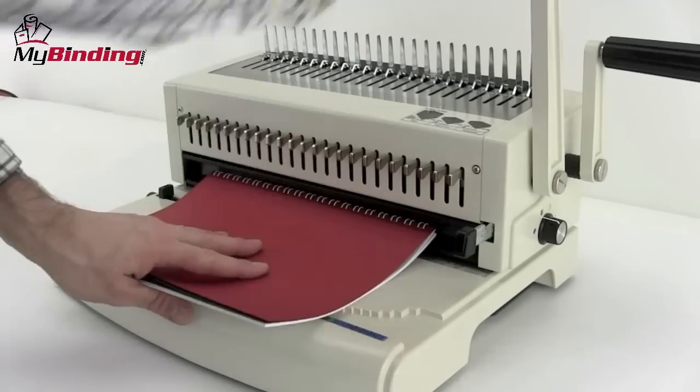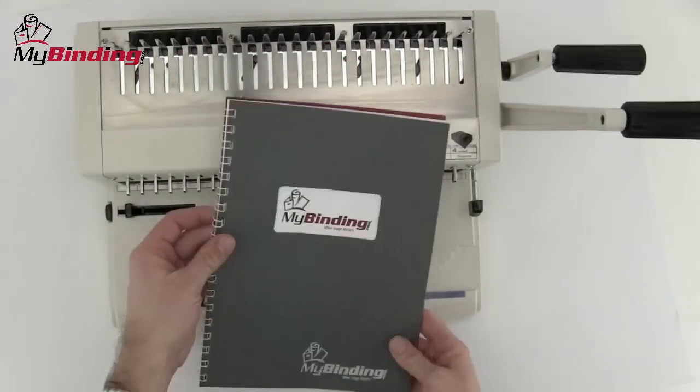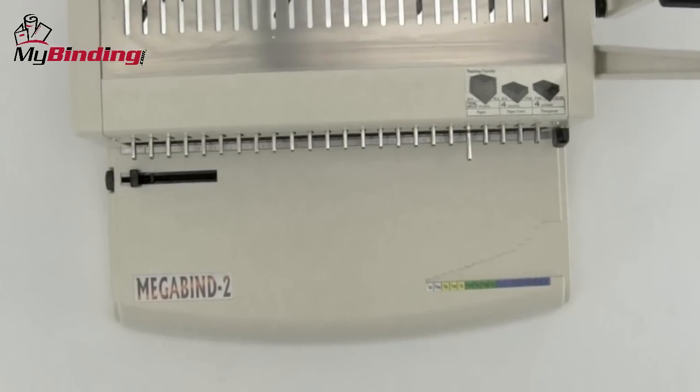This will make sure that the clamp does not come down further than it needs to for your size coil. That's all there is to spiral O. There it is, the Megabind 2 by Achilles.